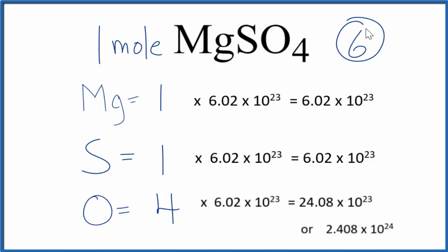If you want to know the total, you're just going to multiply six times Avogadro's number. This is Dr. B looking at the number of atoms in MgSO4. There are a total of six atoms in MgSO4: one magnesium, one sulfur, and four oxygen.